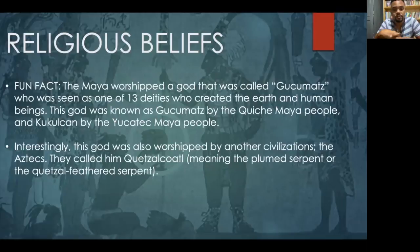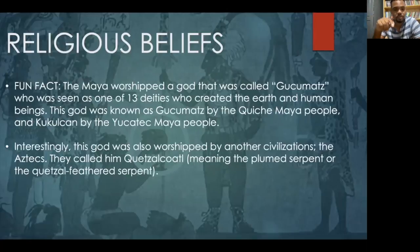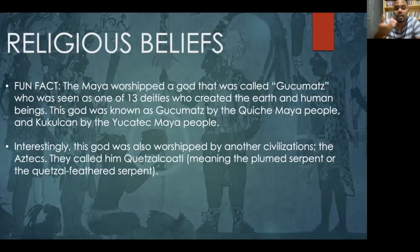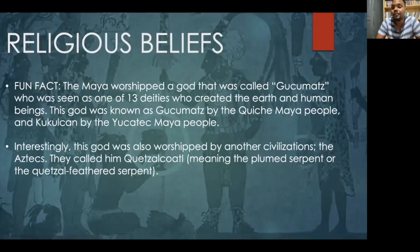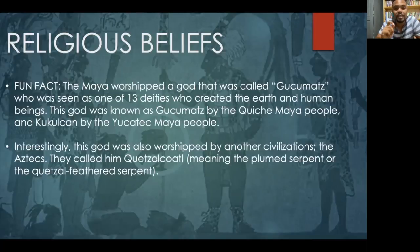Gukumatz was known as Gukumatz by the Kiche Maya people and as Kukumatz by the Yucatan Maya. This particular god is also worshipped by the Aztec civilization — but instead of Kukumatz, they call him Quetzalcoatl, meaning 'the plumed serpent' or 'the Quetzal-feathered serpent.' When we look at the Aztecs in the future, we'll explain more about the folklore surrounding Quetzalcoatl. Interestingly, it has something major to do with the emblem on the flag of Mexico.